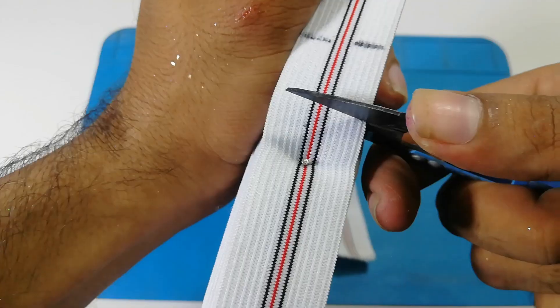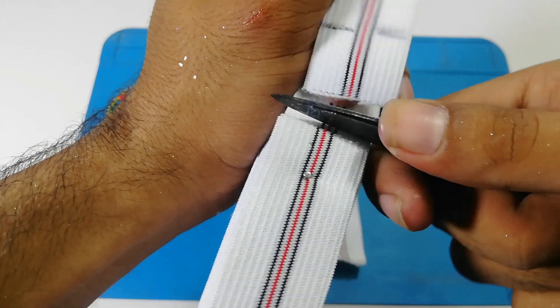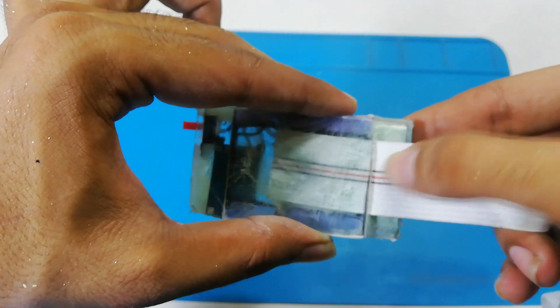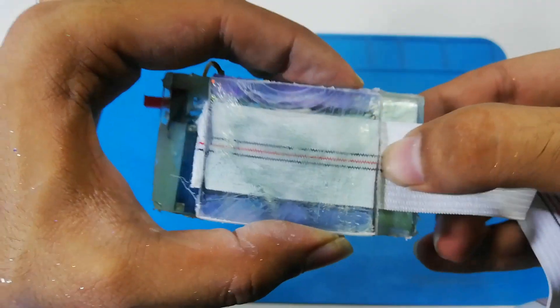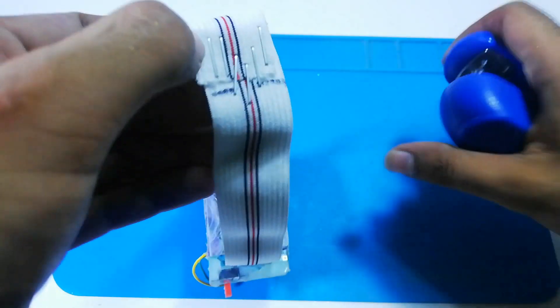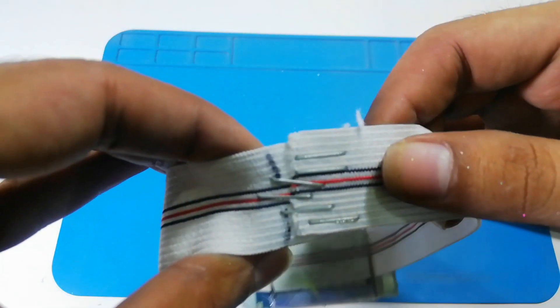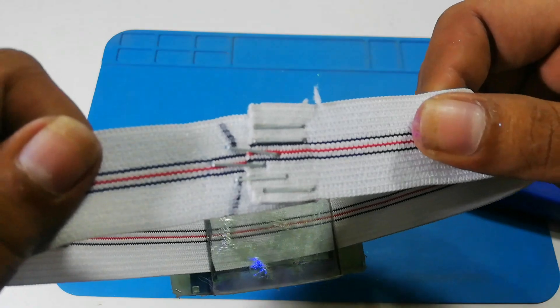Cut out appropriate length of elastic and pass it from this passage. To join both ends, I staple them followed by some hot glue covering. You can use any method you like.